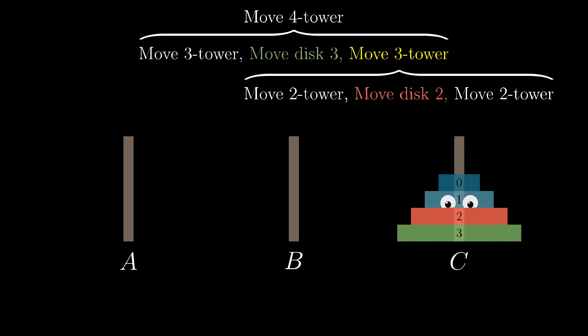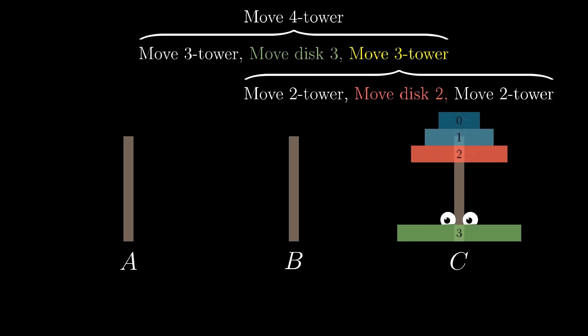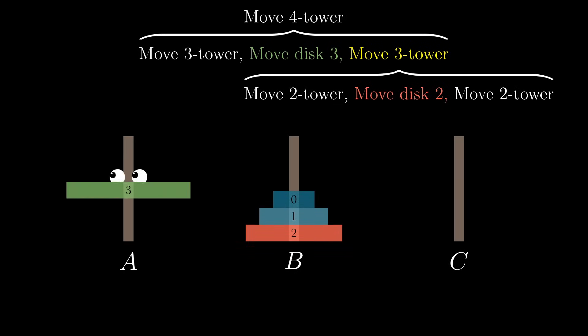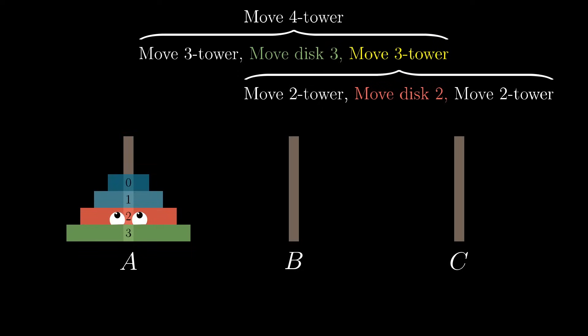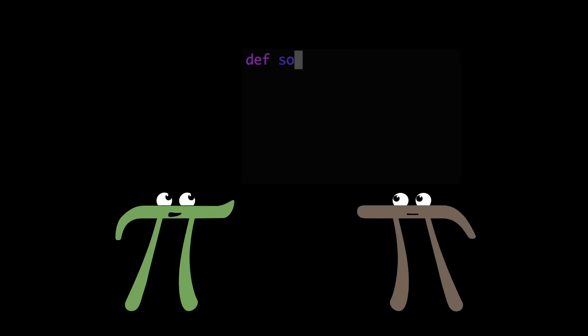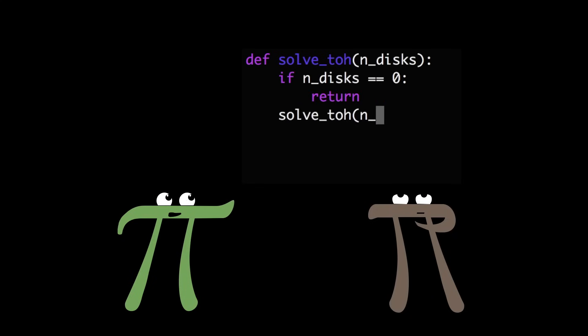But the interesting point is that every single disk pretty much has the exact same strategy. They all say, everybody above me, get off. Then I'm going to move. Okay, everyone pile back on. When you know that insight, you can code up something that will solve Towers of Hanoi, like, five or six lines of code, which probably has the highest ratio of intellectual investment to lines of code ever.